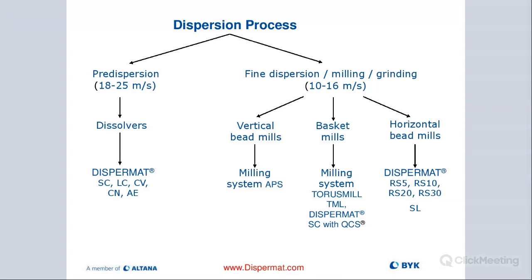We offer a variety of different technologies in the dispersion process. But in the pre-dispersion process, what you really want to look at — and that's the same for all types of equipment — is the tip speed should be between 18 to 25 meters per second. That's the sweet spot, and that's where you really start breaking up these binding forces.